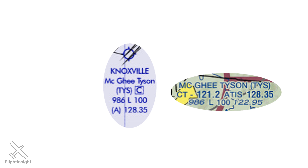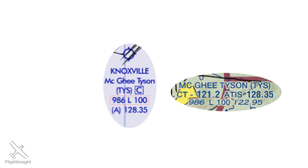When you're flying VFR, you use a sectional chart for navigation. The sectional chart of the Knoxville area emphasizes features and information you'd need if you were flying with visual reference to the horizon and ground. In IFR flight, we'll use an IFR low en route chart, which emphasizes what we need for instrument flying.